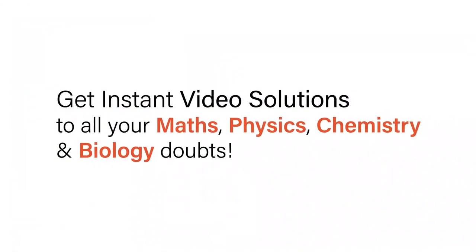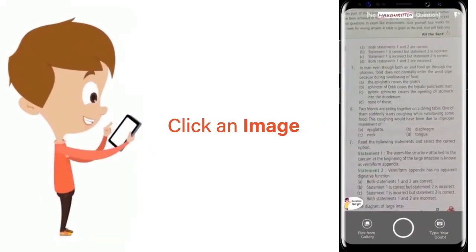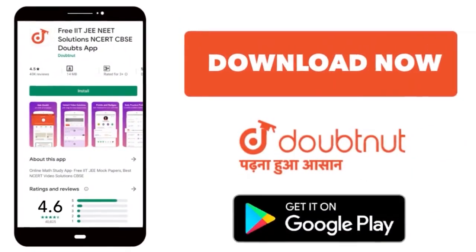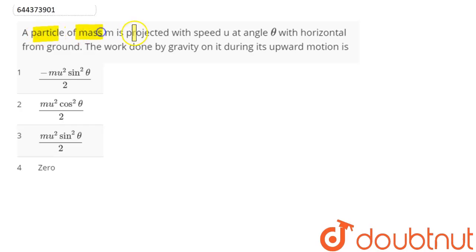With Doubtnet, get instant video solutions to all your maths, physics, chemistry, and biology doubts. Just click the image of the question, crop the question, and get instant video solution. Download Doubtnet app today. Question is: a particle of mass m is projected with speed u at angle theta with horizontal from the ground. The work done by gravity on it during its upward motion is.